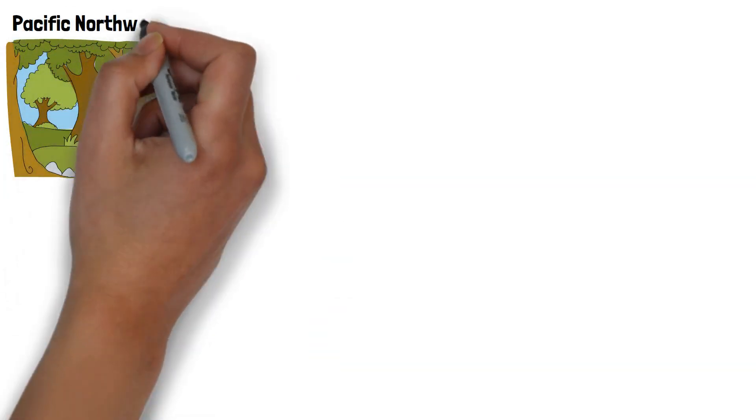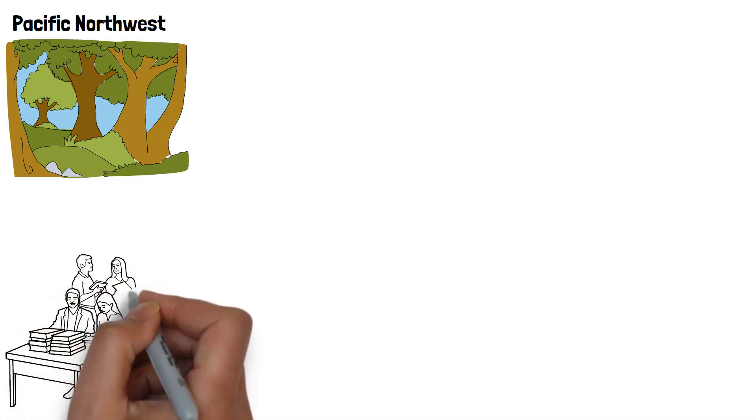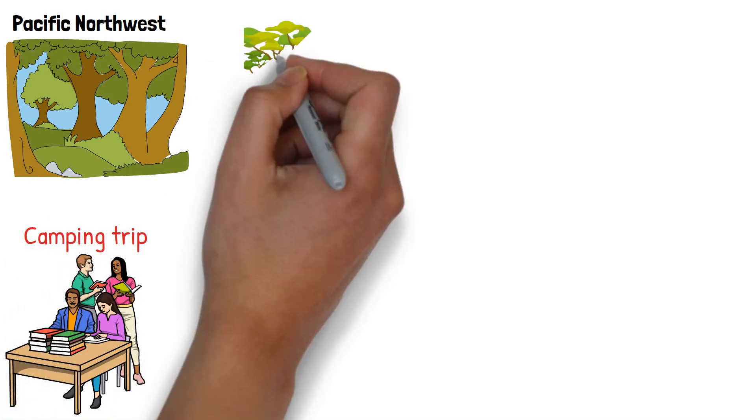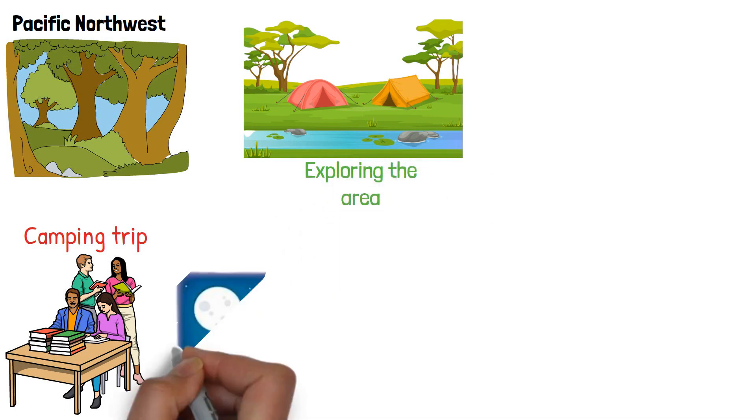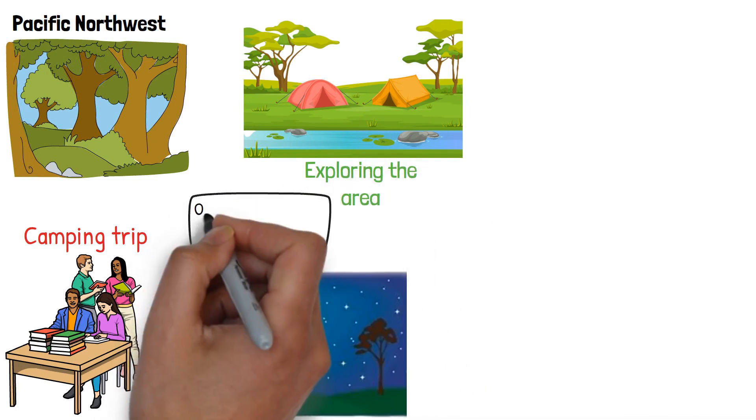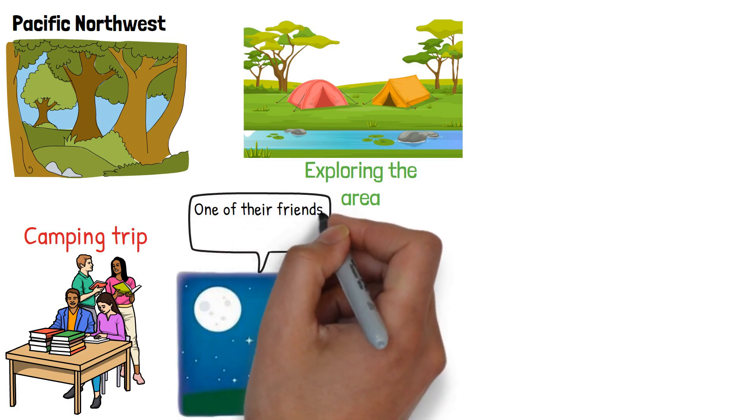Act 1. Our first story takes us to a remote forest in the Pacific Northwest. It was a beautiful summer day when a group of four friends decided to go on a camping trip. They set up their tents near a clear stream and started exploring the area. But when nightfall came, they realized that one of their friends was missing.